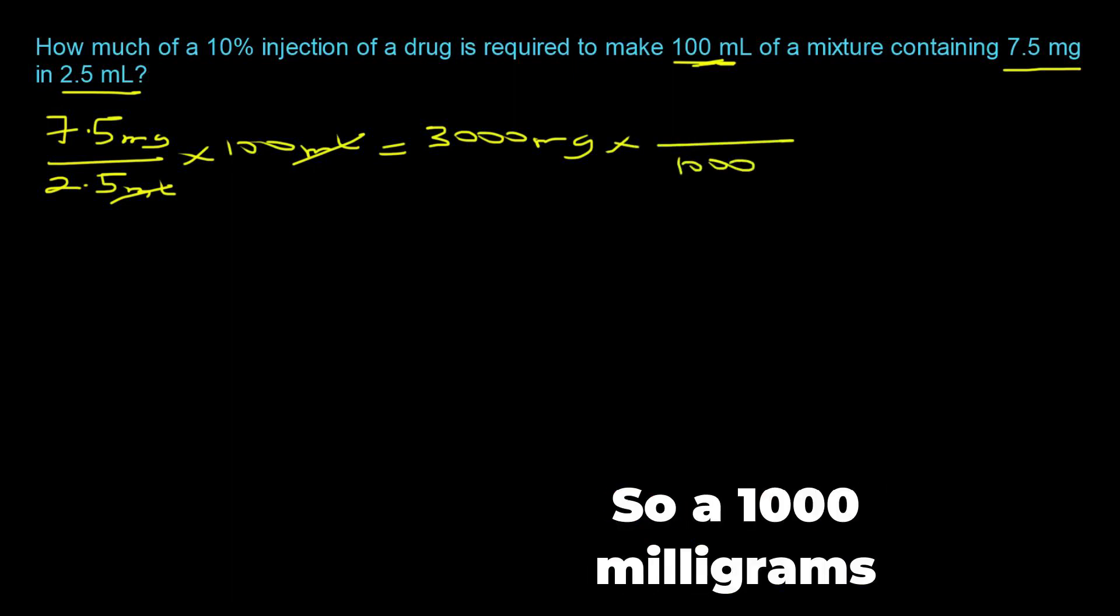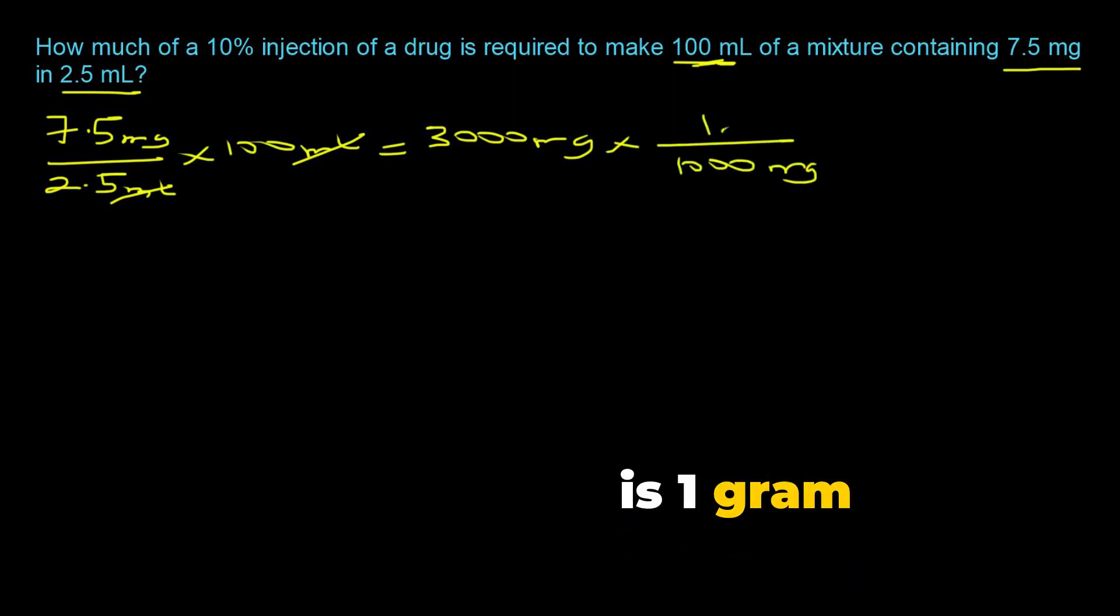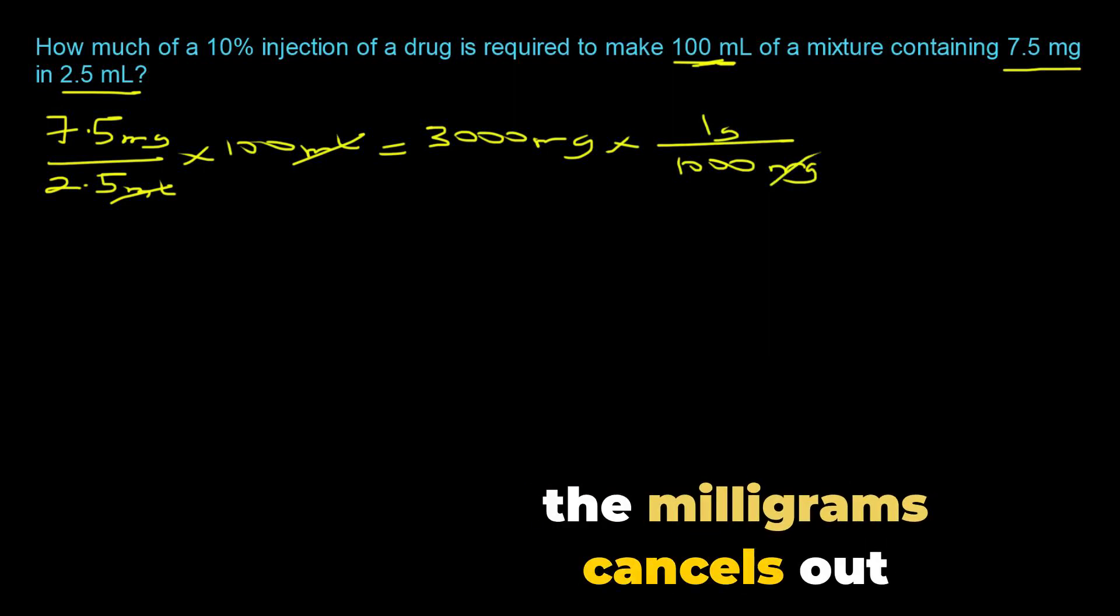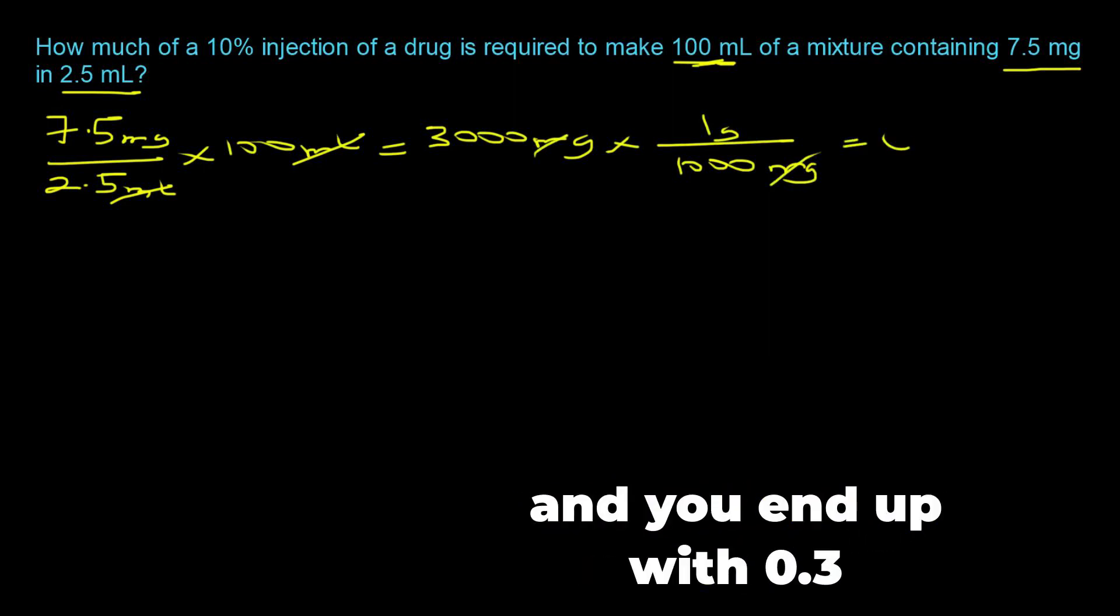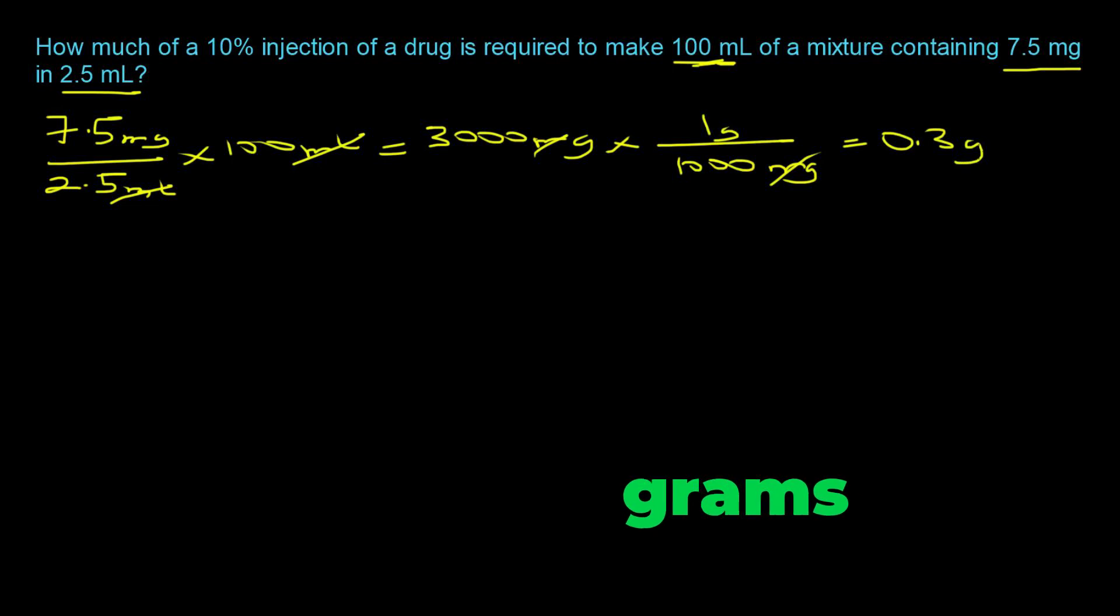But we're going to be strategic here and convert the milligrams to grams. So a thousand milligrams is one gram, the milligrams cancels out, and you end up with 0.3 grams.